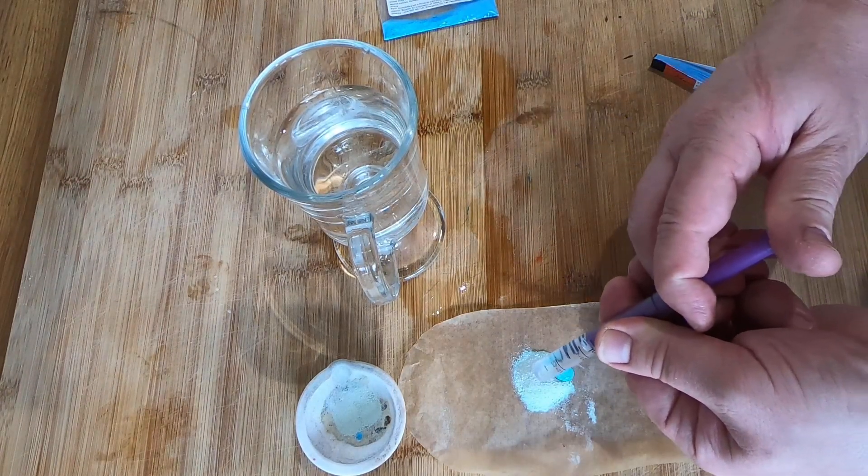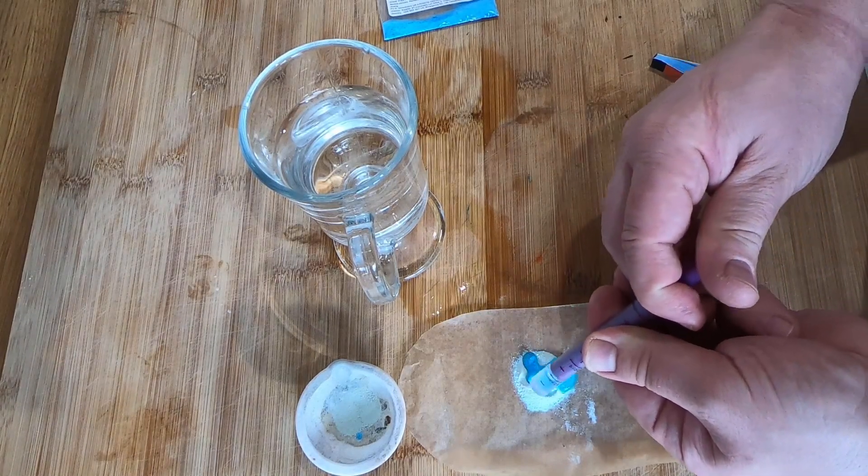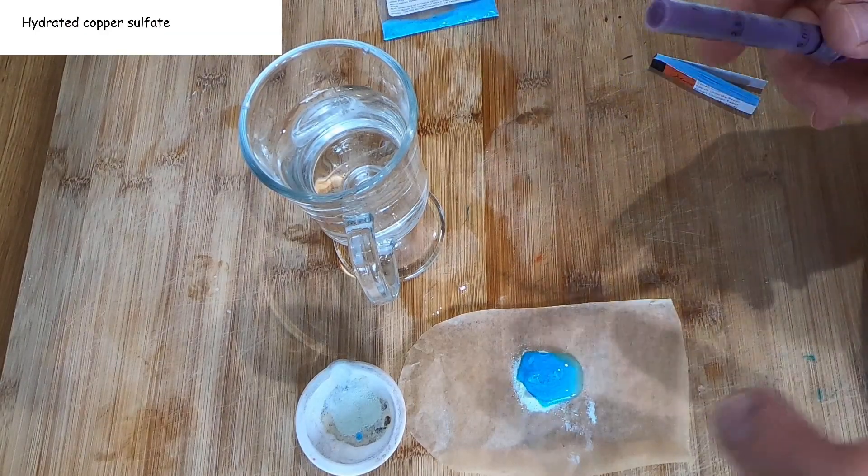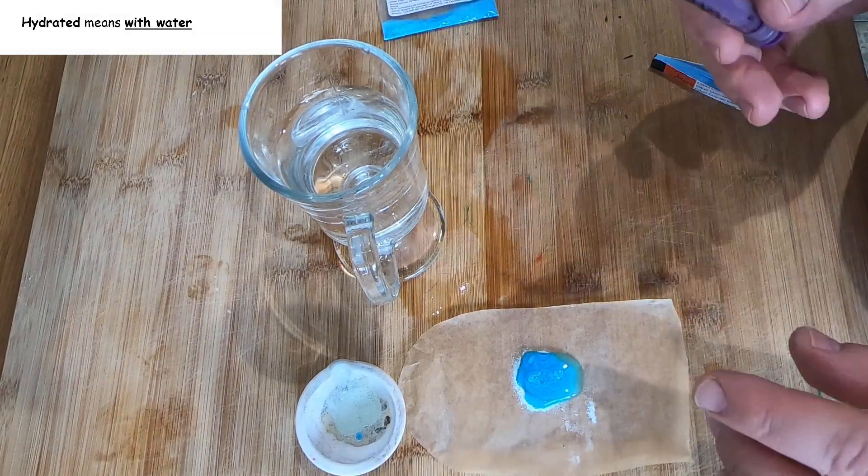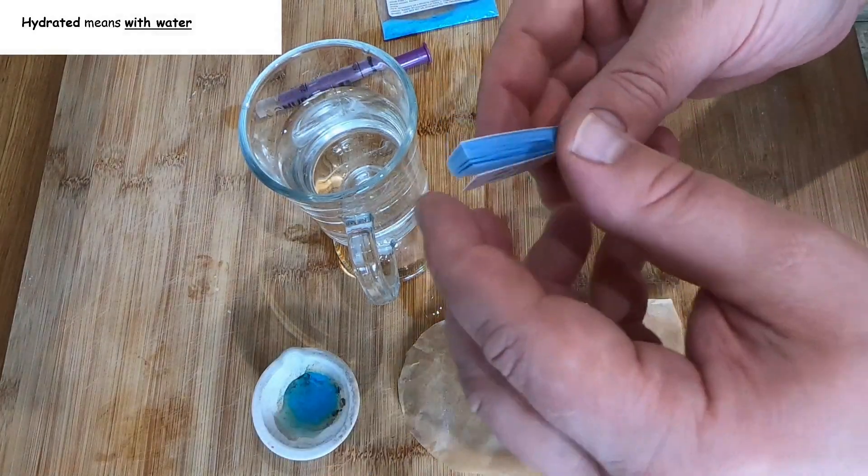So as I add the water back to the anhydrous copper sulfate, it turns blue. And we call this hydrated copper sulfate. So the blue color you see with certain copper sulfates is because it has water in it.